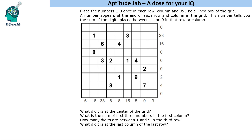Apart from that, numbers are given at the end of each row and each column. That number tells you the sum of the digits placed between 1 and 9 in that row or column. So if it is written as 16, wherever 1 and 9 are present, the sum of digits between them is 16. If it is 8, that means between 1 and 9 the sum of digits will be 8.